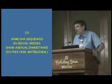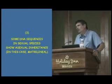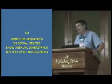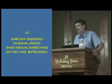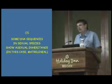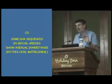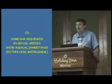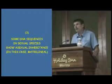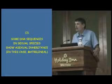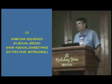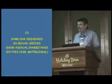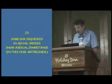Another conceptual revelation was the notion that some DNA sequences in sexual species show asexual or clonal transmission. In the case of mitochondrial DNA, we're talking about matrilineal transmission — a molecule that is for the most part transmitted without recombination from one generation to the next. This is true even within otherwise sexually reproducing species. So we have this blessedly celibate piece of DNA being transmitted through matrilines even within sexual species.